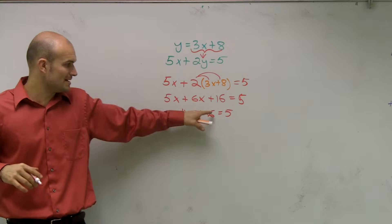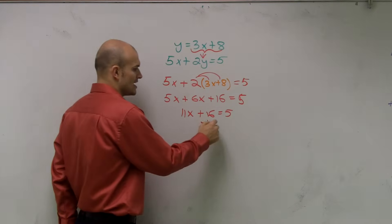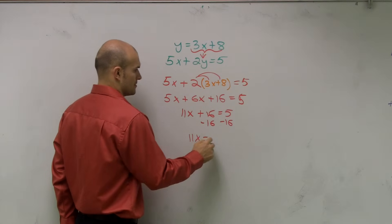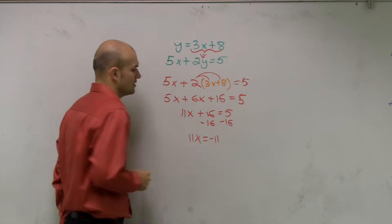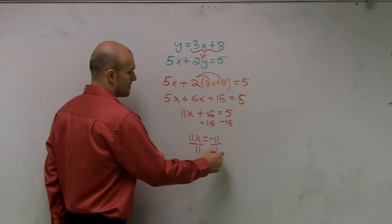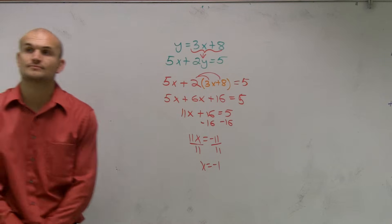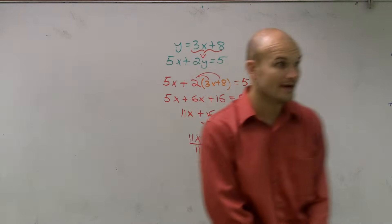I need to get rid of my 16 and get rid of my 11. The 16 is adding to my variable, so I subtract 16 on both sides. Now I have 11x equals negative 11, divide by 11 on both sides. x equals negative 1.